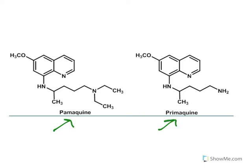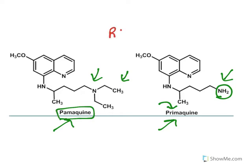Primaquine and palmaquine are both 8-aminoquinoline derivatives. The only difference is the substitution on the amine group: if a primary amine group is present, it is called primaquine, whereas a diethyl substitution gives palmaquine. The mechanism of action of both drugs is that they generate reactive oxygen species which are lethal to plasmodium.